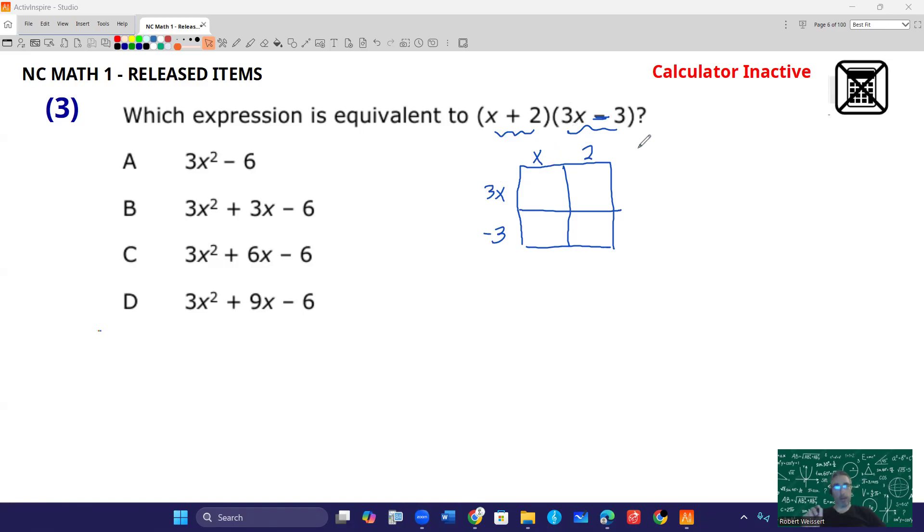So the rules for multiplying variables are if you multiply 3x times x, that's saying 3 times x squared. So these really have like exponents of 1, and those ones get added. So 3 times x squared. That's going to go right here. When I'm doing 3x times 2, that's going to be 3 times 2, so that's 6x.